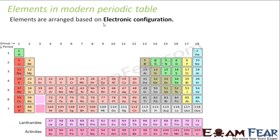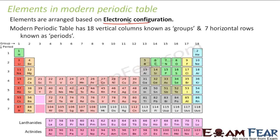In the modern periodic table, elements are arranged based on electronic configuration. There are 18 vertical columns known as groups and 7 horizontal rows known as periods.